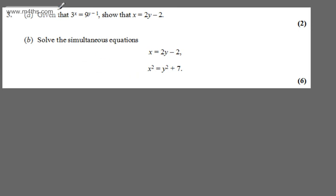This is question 3. In part A, it says given that 3 to x is equal to 9 to the y minus 1, show that x is equal to 2y minus 2. The question carries two marks.